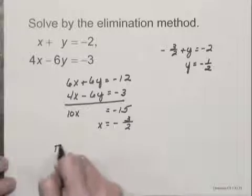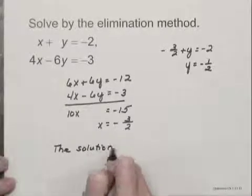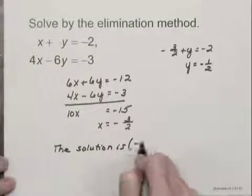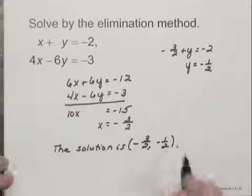So the solution of this system of equations is the ordered pair negative 3 halves, negative 1 half.